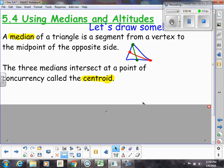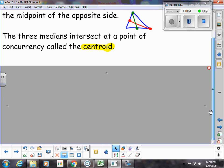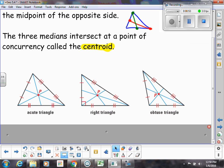The three medians of a triangle intersect at a point of concurrency called the centroid. Here we've got an acute triangle with all the medians intersecting at its centroid P. In a right triangle, all the medians intersect at point P and then an obtuse.